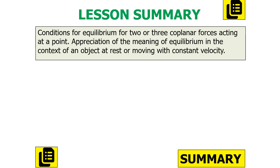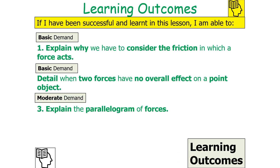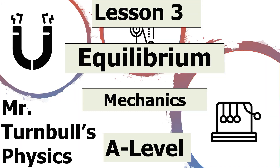To summarize, we've learned the conditions for equilibrium for two or three coplanar forces acting on a point, and the meaning of equilibrium for an object at rest or moving with constant velocity. We can explain why we must consider the direction in which a force acts, when two forces have no overall effect on a point object, and how to use the parallelogram of forces. Thank you very much for watching this lesson on equilibrium, part of the mechanics topic in AQA A-level physics — have a lovely day.